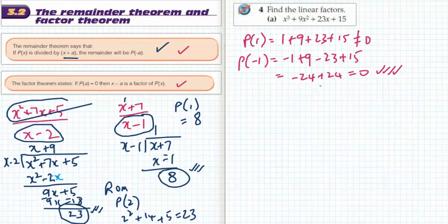Bingo, I found a remainder of 0. Since I found a remainder of 0, if P of negative 1 equals 0, therefore using the factor theorem, x plus 1 must be a factor.